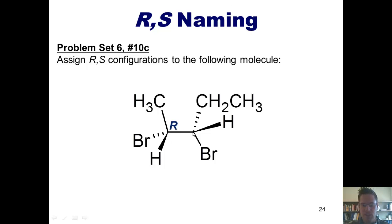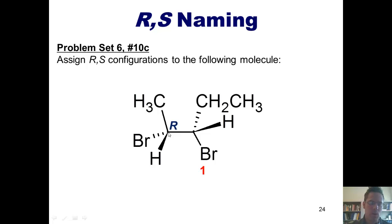Let's now do the same thing for the stereocenter at the right. I've got a carbon that's bonded to a carbon, a carbon, a bromine, and a hydrogen. Which of those has the highest priority? The bromine. Now the carbon here and the carbon here tie. So I have to go out to break the tie. This carbon up here is bonded to a carbon, and this carbon down here, going in the direction toward the highest priority substituent on it, is bonded to a bromine. Bromine wins, thus the appendage here to the left has priority number 2, and this ethyl group has priority number 3.